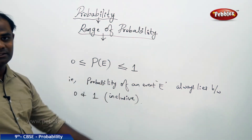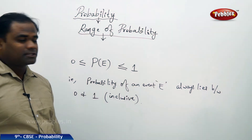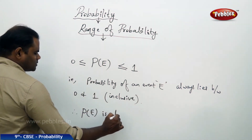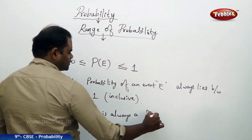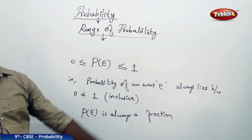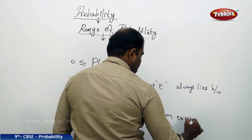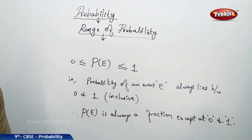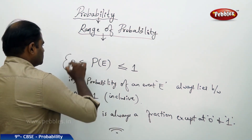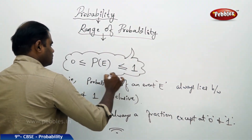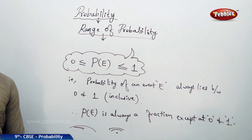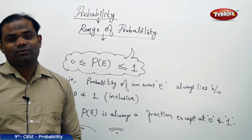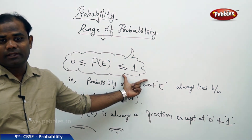It cannot cross 1 on the right and cannot cross 0 on the left. Therefore it is always a fraction, except when it is at the endpoints 0 and 1. Except at 0 and 1, the probability is always a fraction — that is the learning outcome. Probability always lies between 0 and 1 inclusive, and hence is always a fraction except at 0 and 1. That is the range of probability for any event E.